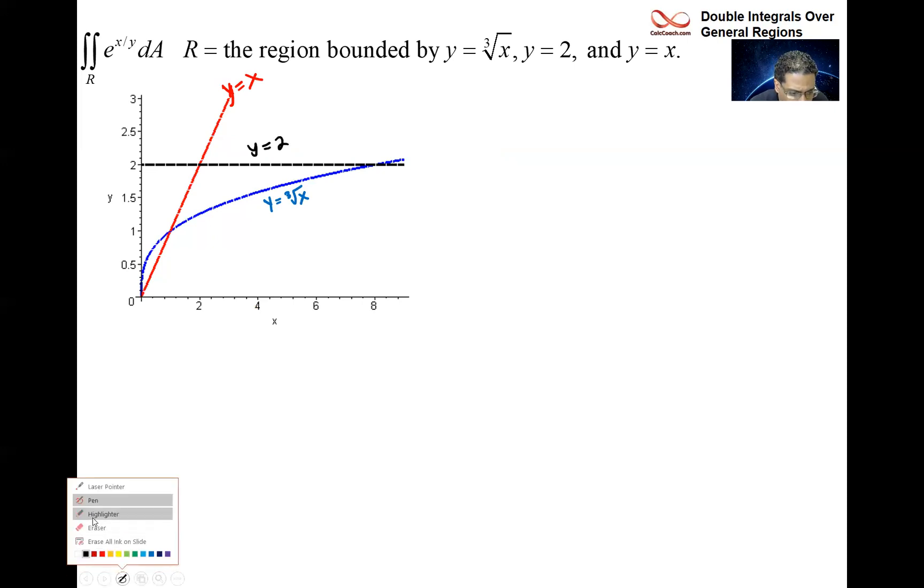Our region then is the region that looks like a triangle here. Two parts of it are straight lines, but the third part is the curve, y equals root of x. That's our region that we're calling R. That is the region where we want to integrate above that region in the xy plane and underneath our surface, which is e to the xy.